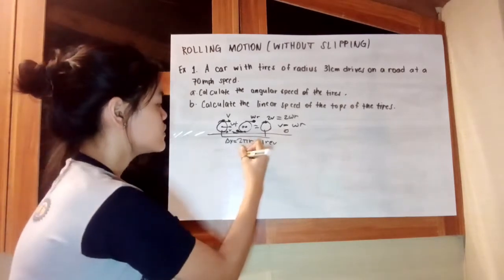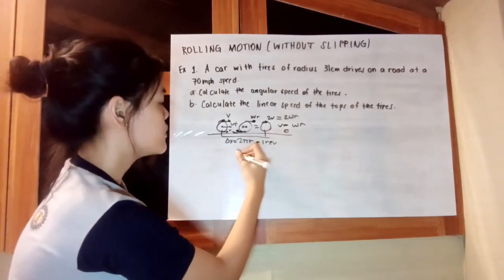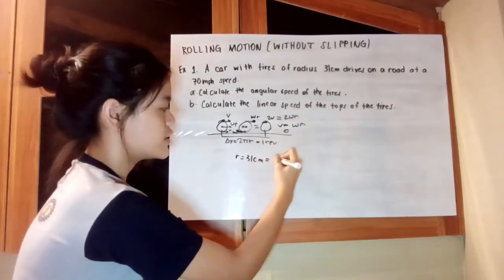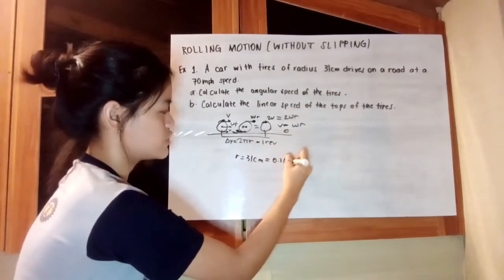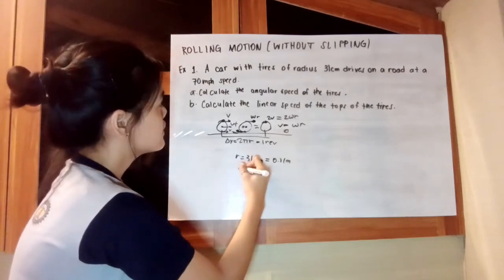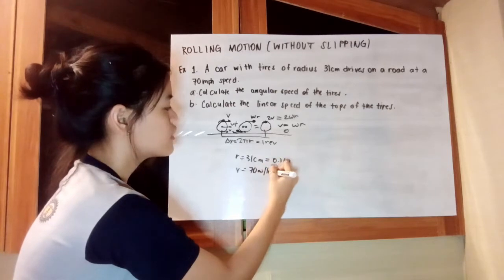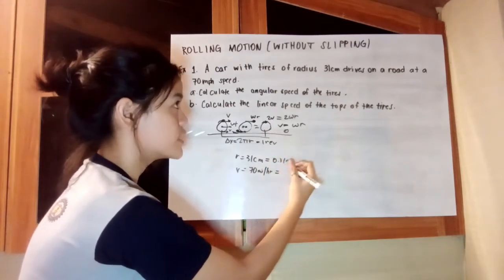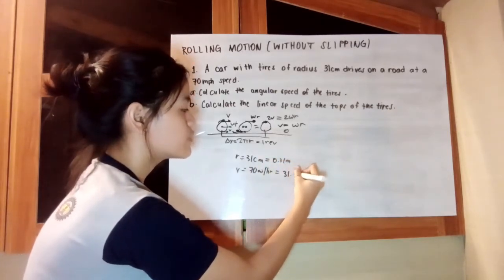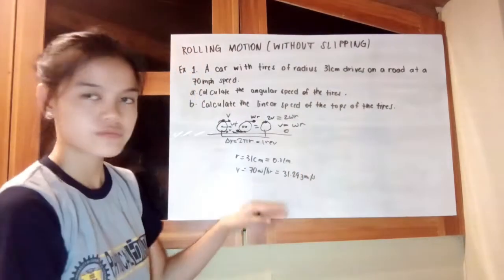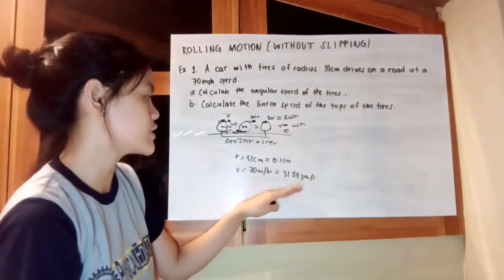Let's first write our given values. We have a radius of 31 cm which is equivalent to 0.31 meters and a velocity of 70 miles per hour which is equivalent to 31.293 meters per second. We have here our given values.